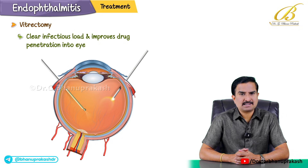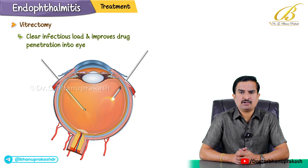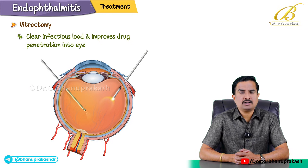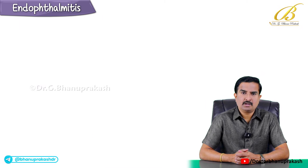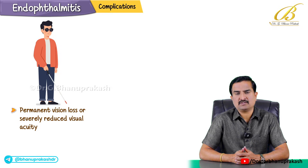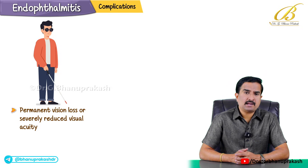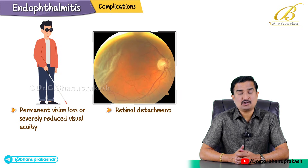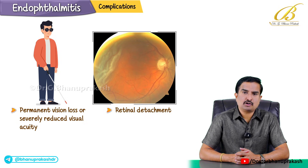Before concluding, let us discuss complications. Even with timely intervention, complications can arise, underscoring the importance of early detection and aggressive treatment. Permanent vision loss or severely reduced visual acuity is the most serious complication. Retinal detachment may also occur, requiring additional surgical intervention. These are the most important complications seen in endophthalmitis.